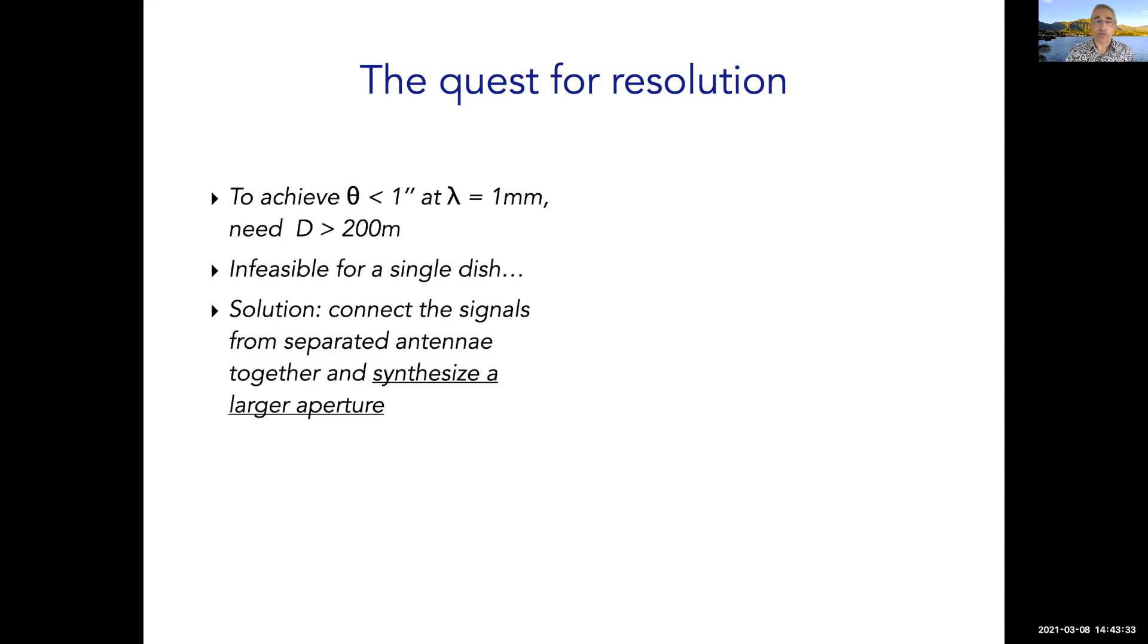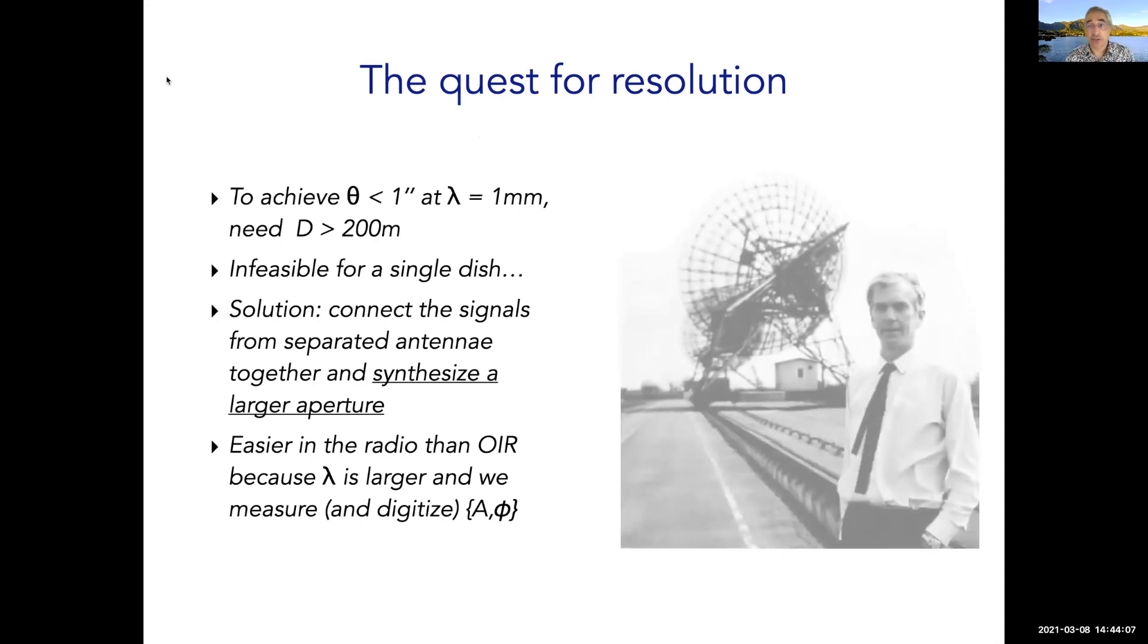We can do this in the radio because we measure the radiation as a wave. We measure the amplitude and the phase. So it makes it relatively easy to combine them. We also digitize it so we can record it and do it all in electronics. The electronic revolution has really allowed these huge advances in interferometry. It's consequently easier to do than in the optical regime. That's what the school is going to teach you all about.